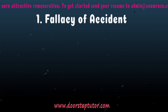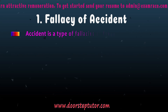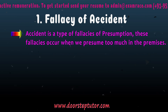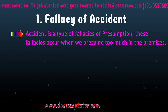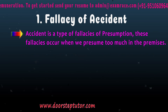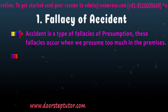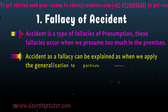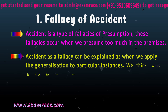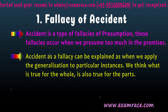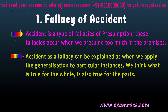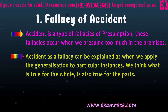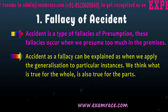Fallacy of Accident: Accident is a type of fallacy of presumption. These fallacies occur when we presume too much in the premises. Accident as a fallacy can be explained as when we apply a generalization to particular instances — we think what is true for the whole is also true for the parts.